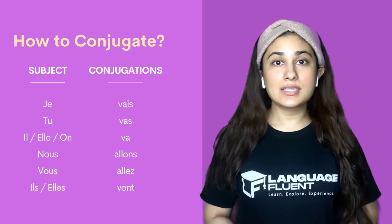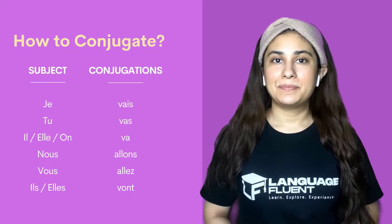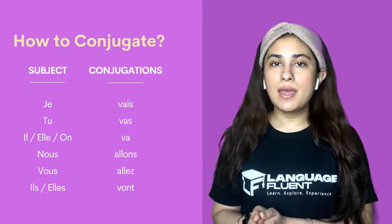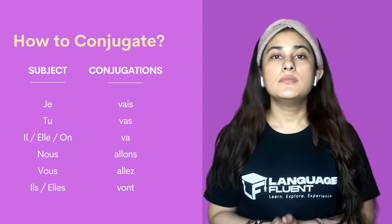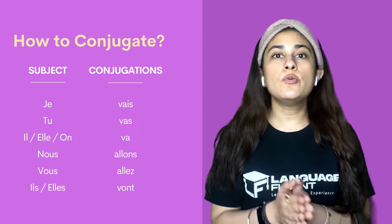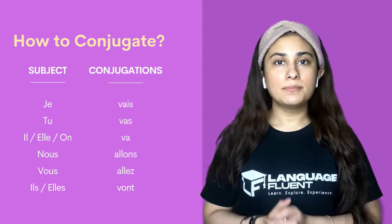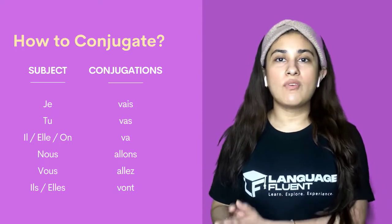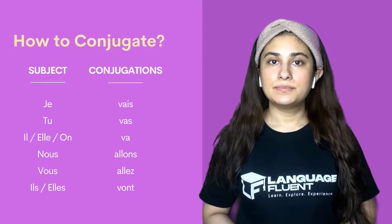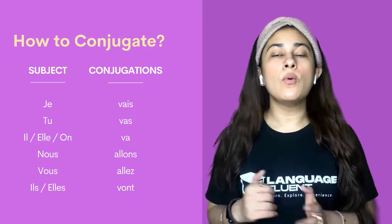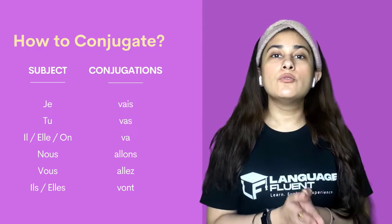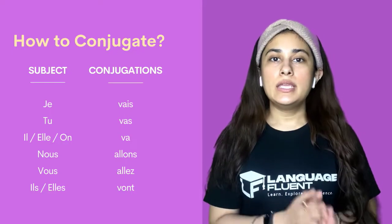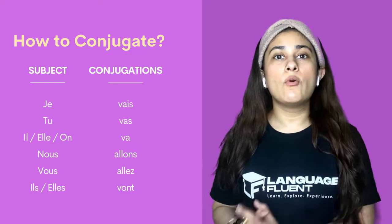Let's have a look at the conjugation of the verb aller. We have: je vais, tu vas, il va, elle va, on va, nous allons — we have the linking — vous allez — again the linking — ils vont, elles vont.